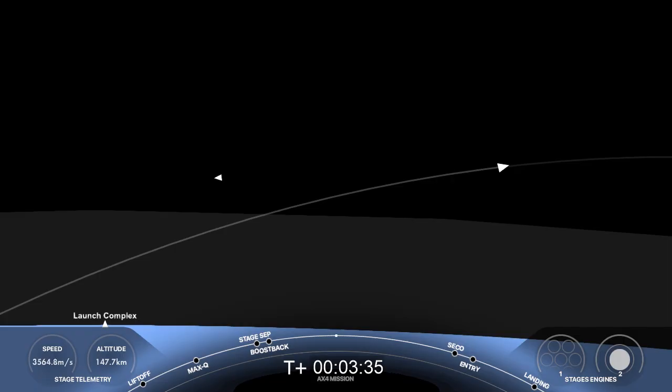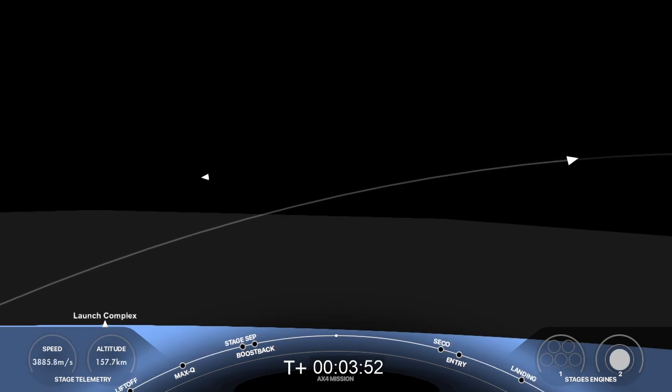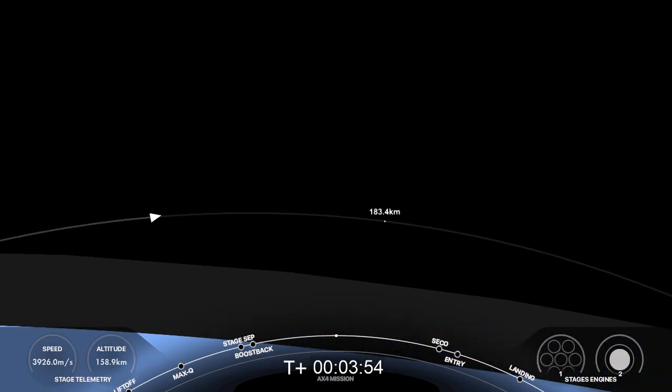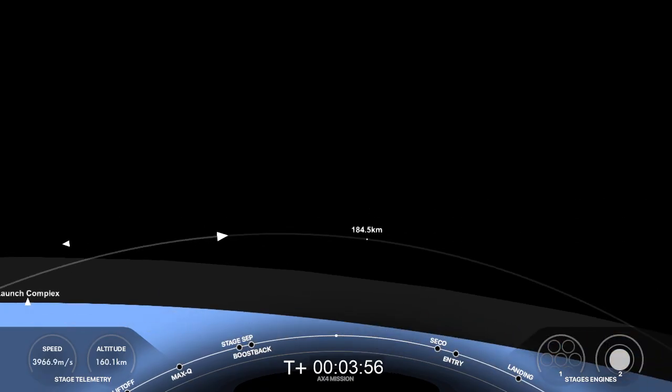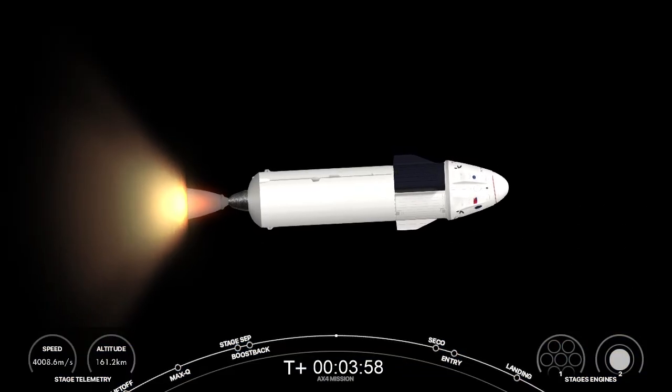T plus four minutes. Everything continuing to go well. And we've got our first view of the crew inside Dragon. Second stage continuing to fire. Right now second stage just a little bit more than one G. There's so much propellant that even with a 220,000 pound thrust engine, it takes a while before the G loads start to build up during the second stage flight.